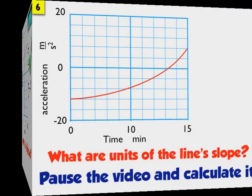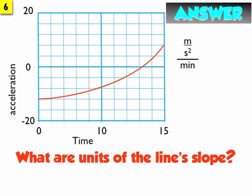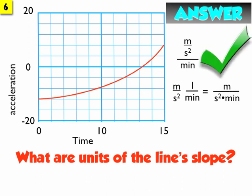Last example. What are the units of the line's slope? Even though it's a curve, it's still the same process — units of the rise divided by units of the run. So meters per second squared divided by minutes. Dividing by a number is the same as multiplying by the inverse of that number. This becomes meters per second squared times 1 over minutes. This gives us meters divided by second squared times minutes.